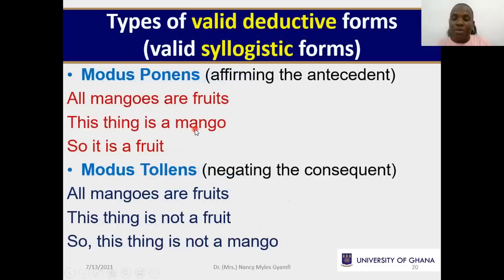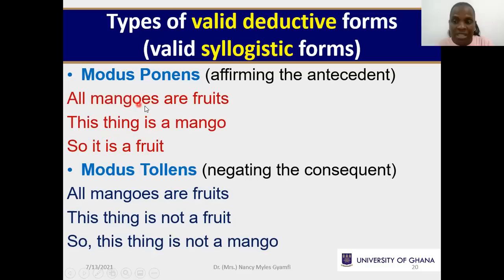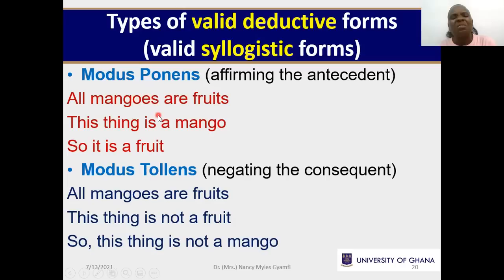The problem arises when, right after your conditional, you affirm the consequent in the premises and then conclude with the antecedent. That is a fallacy. We name the fallacy by the mediating premise — the second premise. After the universal premise, whatever you do next determines the name of the argument. If you affirm the antecedent and then conclude by affirming the consequent, that is valid modus ponens.